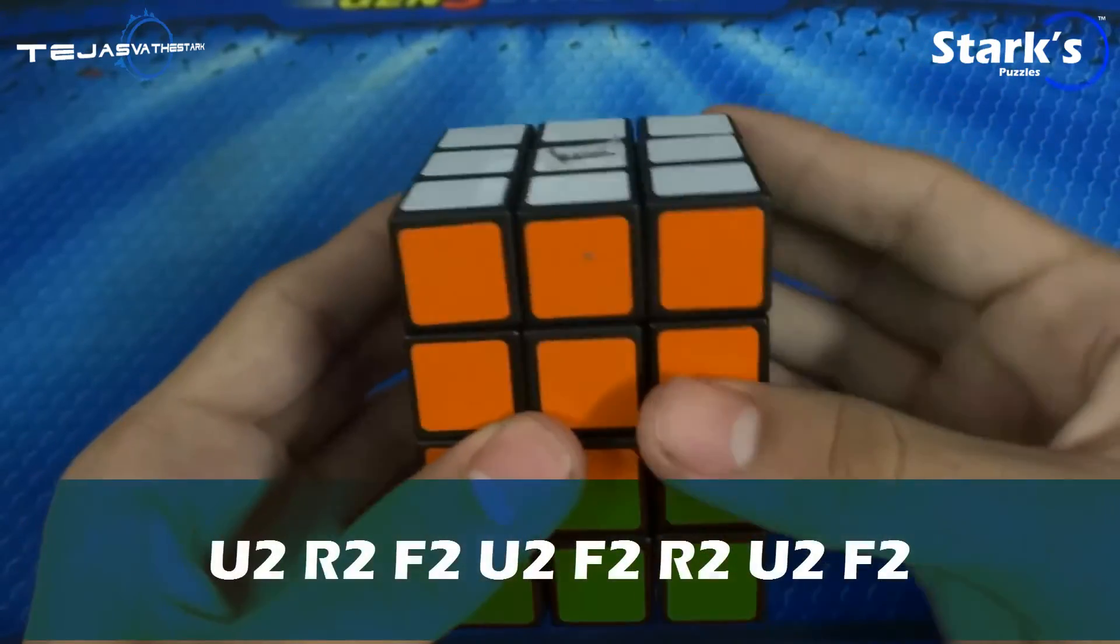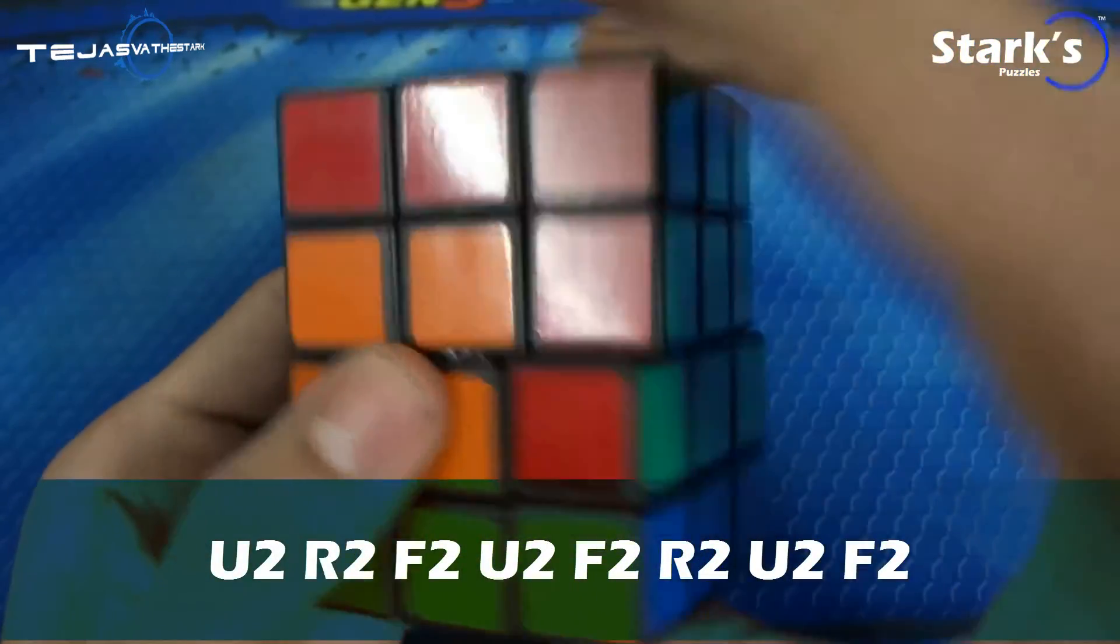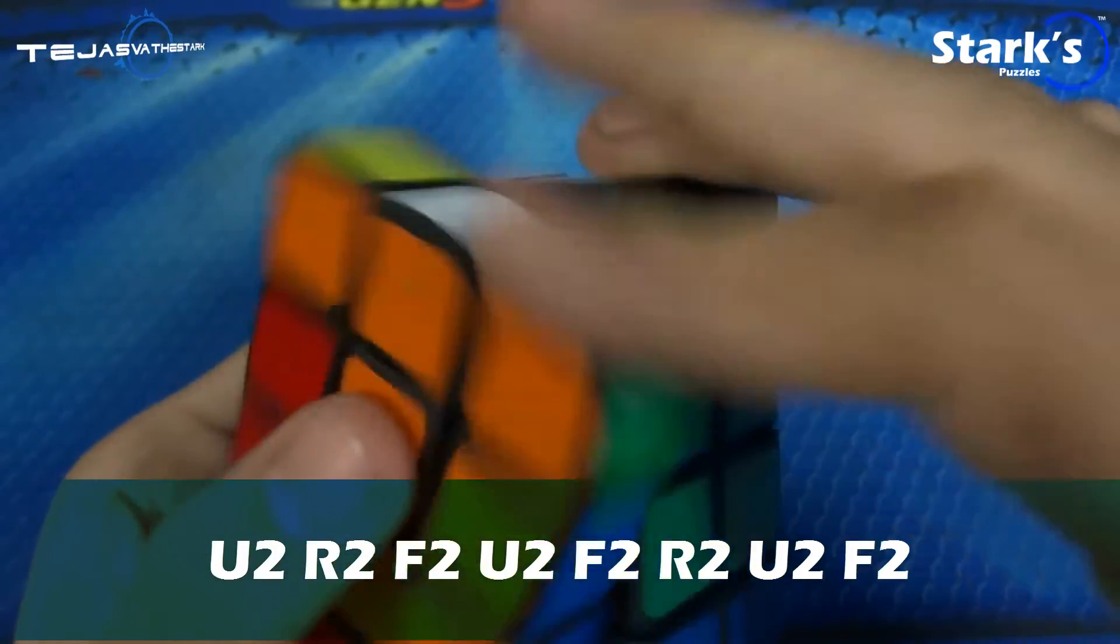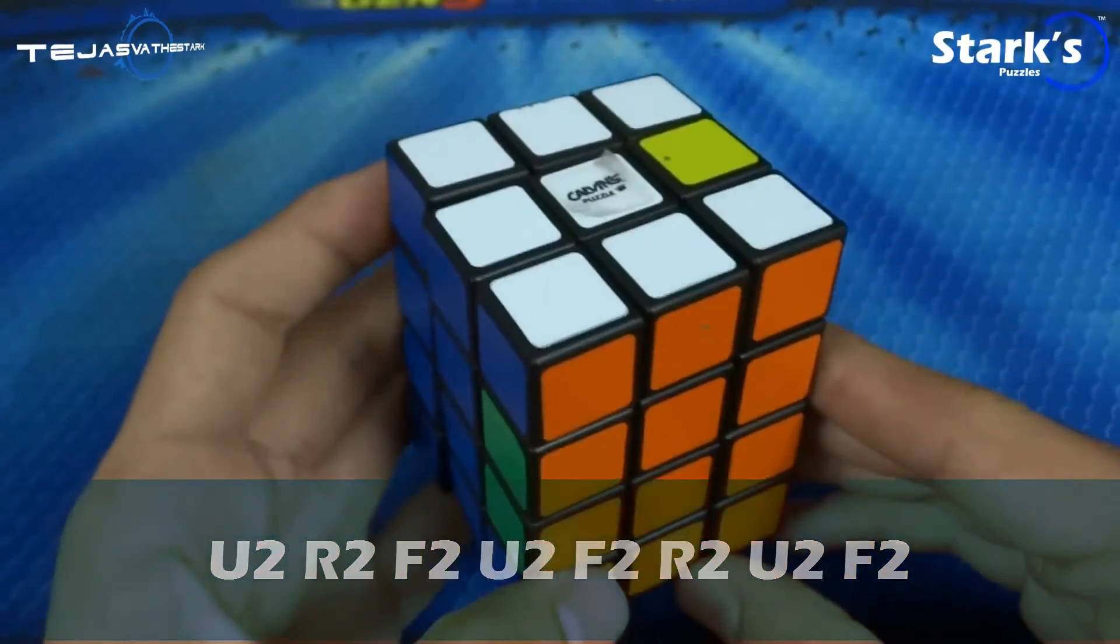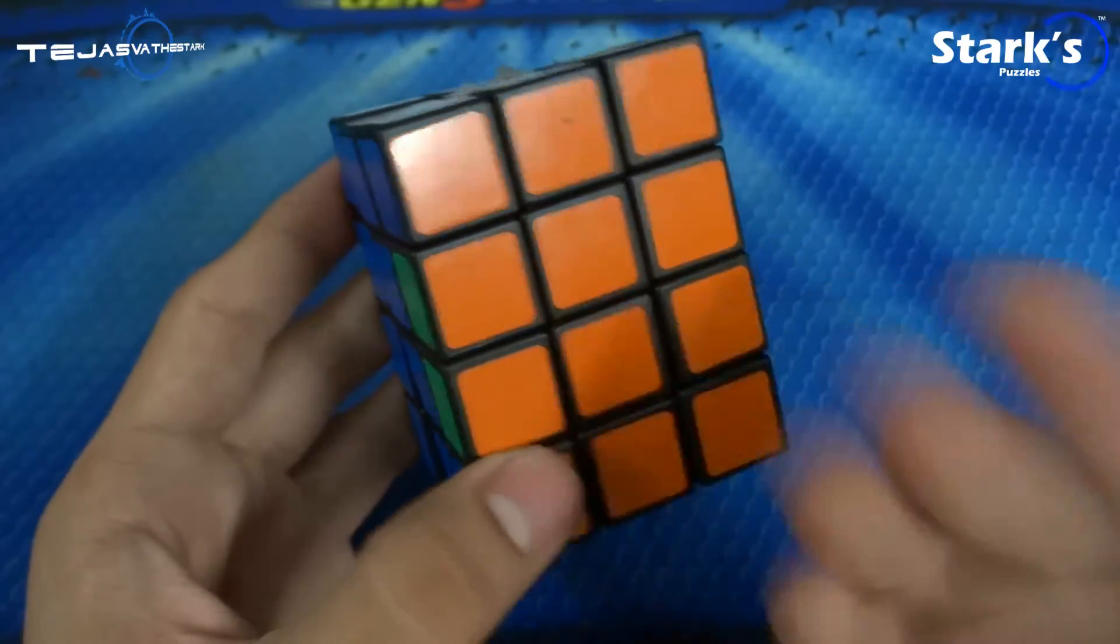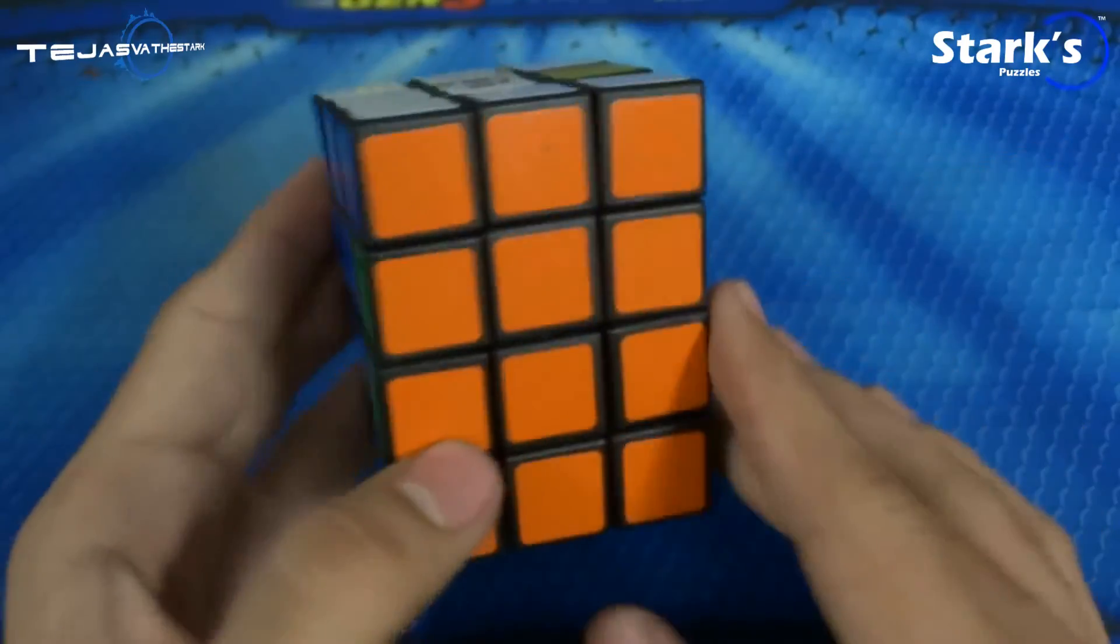First of all the parity algorithm is u2 r2 f2 u2 f2 r2 u2 f2. As you can see, these two are swapped like that, I mean flipped over.